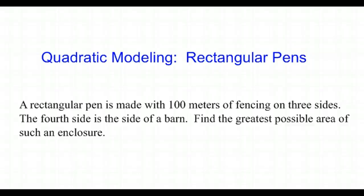Quadratic modeling: rectangular pens. A rectangular pen is made with 100 meters of fencing on three sides. The fourth side is the side of a barn. Find the greatest possible area of such an enclosure.